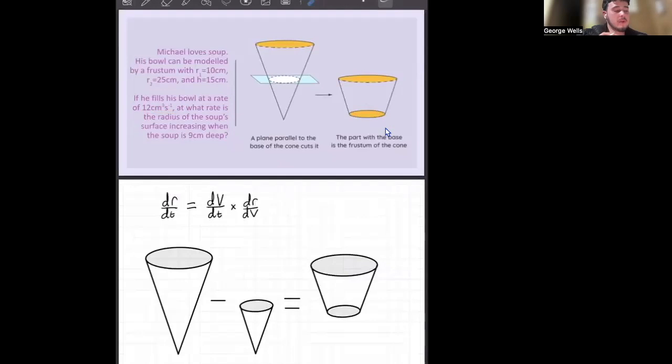Okay, so the rate of the soup's radius increasing over time, that's going to be dr over dt. So we want to find out dr over dt.